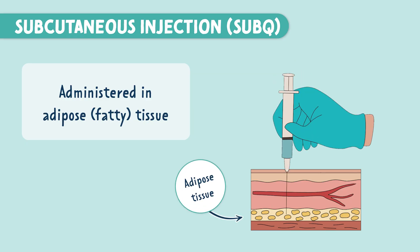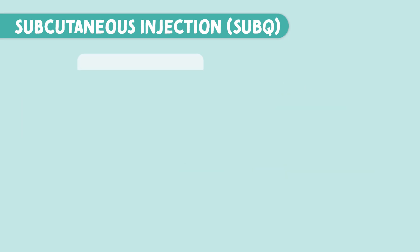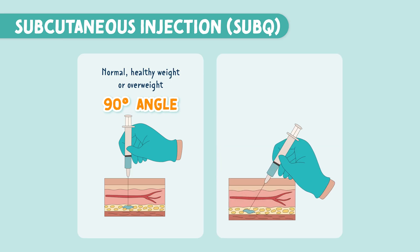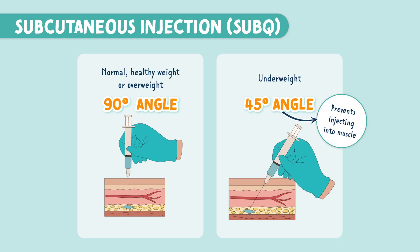The angle depends on the patient's weight. We give it at a 90 degree angle for someone with a normal healthy weight or overweight. And we give it at a 45 degree angle for underweight patients so that you don't accidentally inject it into the muscle.